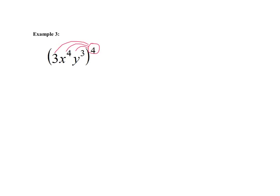Let's do the coefficient first. We're really saying 3 raised to the fourth power — we'll leave it at that for now. Then for x: I had x to the fourth, and I'm raising that to the fourth, so that's x to the fourth times 4. And for y: it was raised to the third, and now we're raising it to the fourth, so y to the third times 4. Now we can simplify.